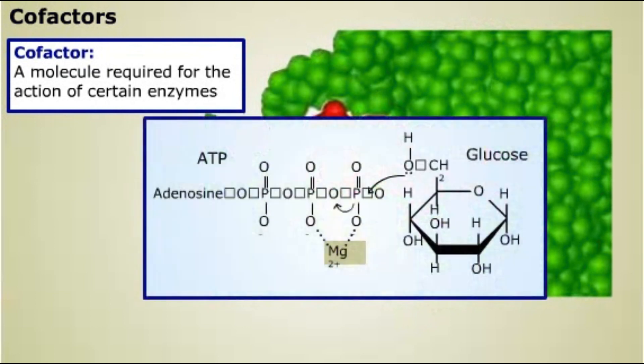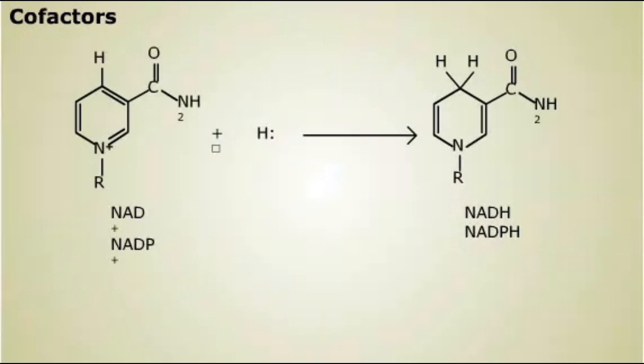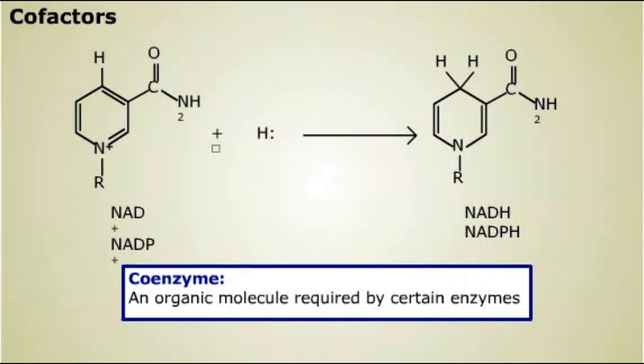Magnesium ions function to shield the negatively charged groups of ATP and facilitate the reaction with glucose. Coenzymes are also cofactors. A coenzyme is an organic molecule often derived from vitamins.